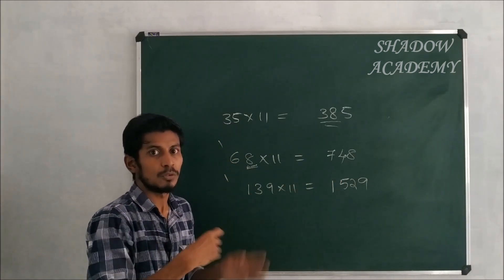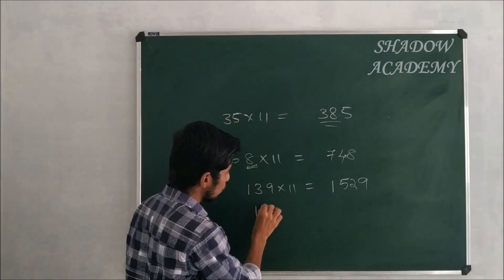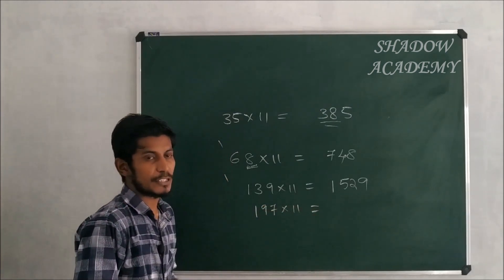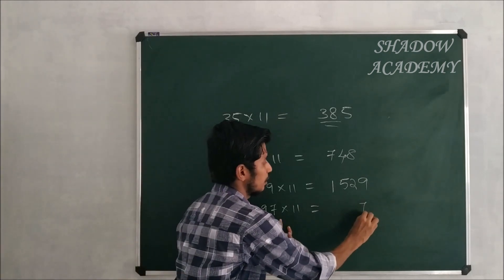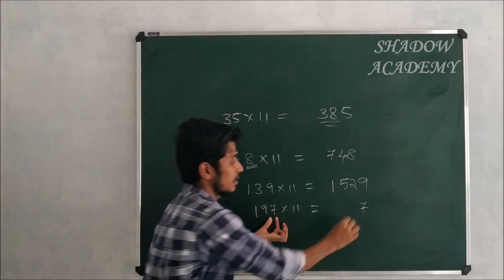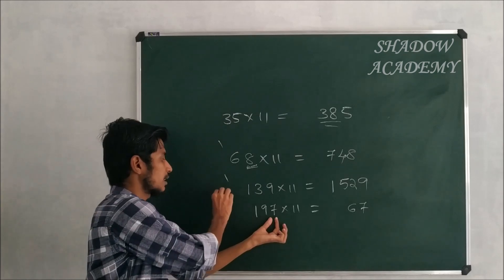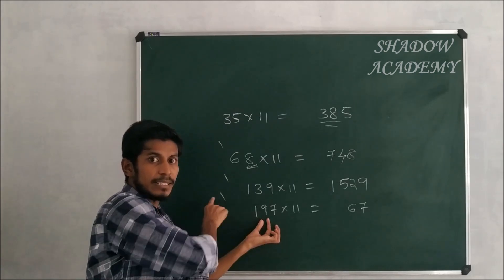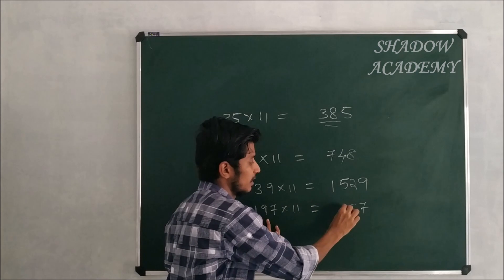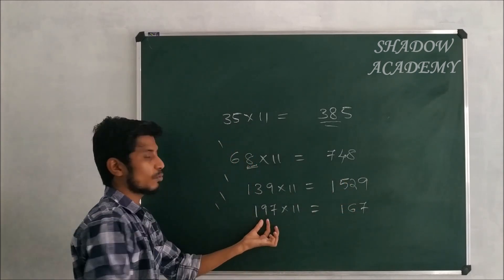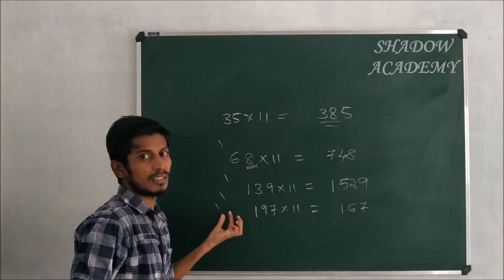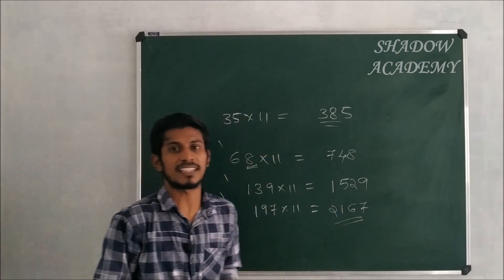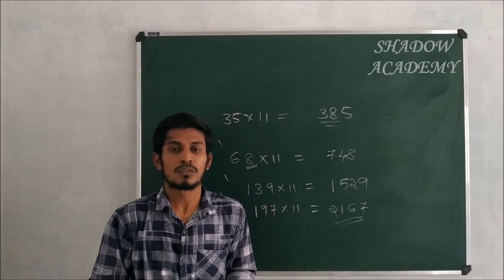197 × 11: write 7. Then 9 + 7 = 16, write 6 carry 1. Then 1 + 9 + carry 1 = 11, write 1 carry 1. Then 1 + carry 1 = 2. So the answer is 2167.